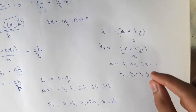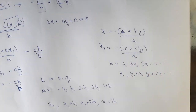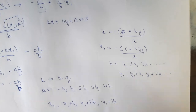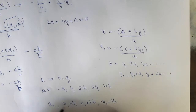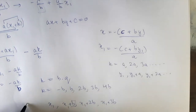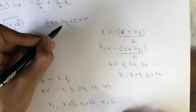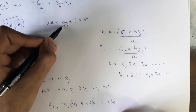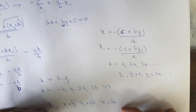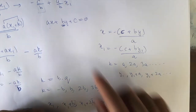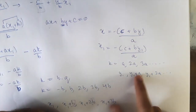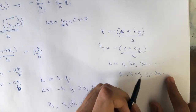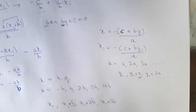So we see that once we have one integral solution, all integral solutions have their x's moving in one AP and their y's moving in another AP. The common difference of the x-AP is b — the coefficient of y — and the common difference of the y-AP is a — the coefficient of x. Pretty neat!